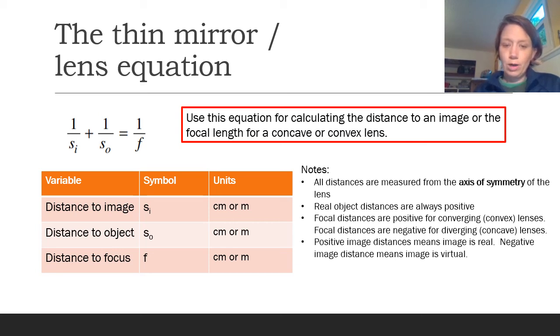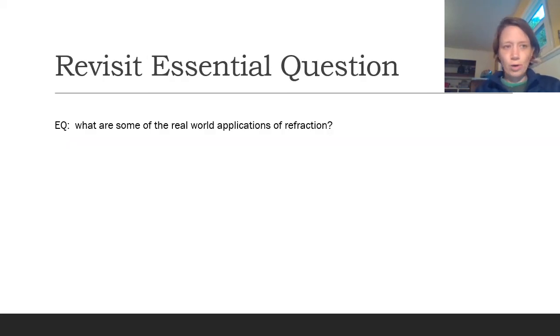When you end up with your image value being positive, you've got a real image. A negative image distance is going to mean the image is virtual. So the equation should confirm what you discover in your ray diagrams. Hopefully we just buzzed right through that. Take a minute, revisit the essential question: What are some of the real world applications of refraction? Think about how this last video where I went through so much content, but you had all the skills built up from the stuff we've been doing in the last couple weeks. Hopefully it made sense and you feel like you're ready to do some practice. Thanks for watching.